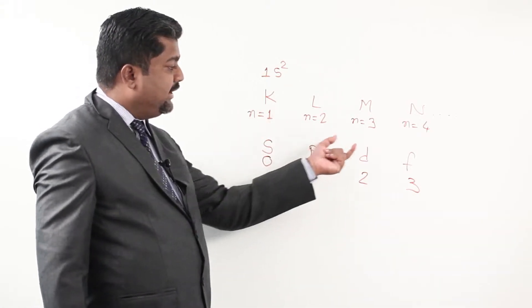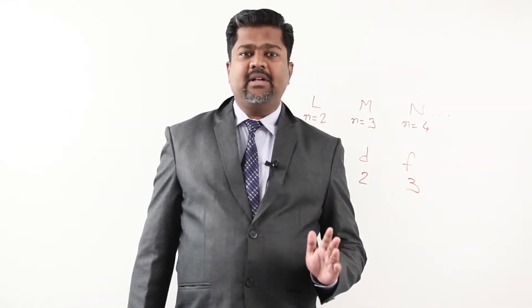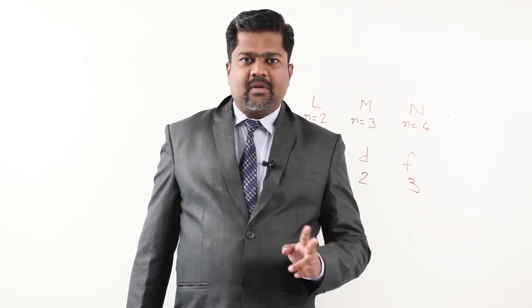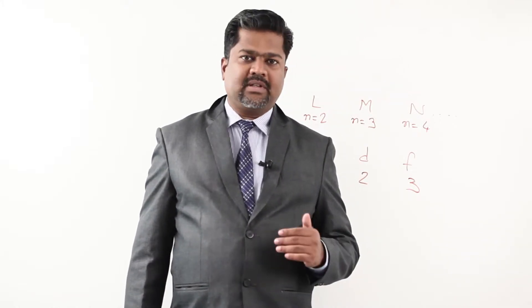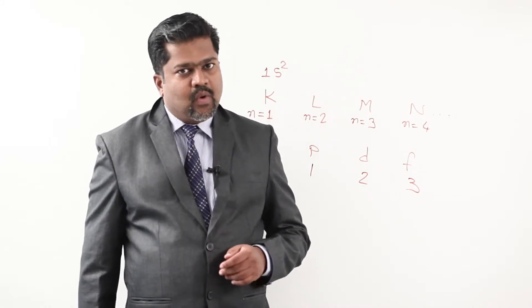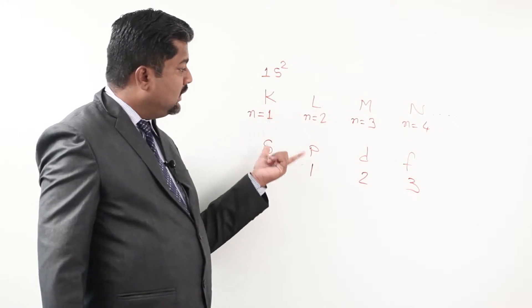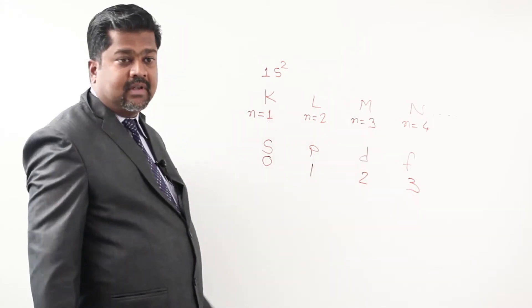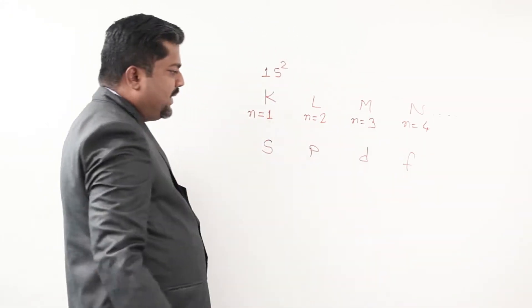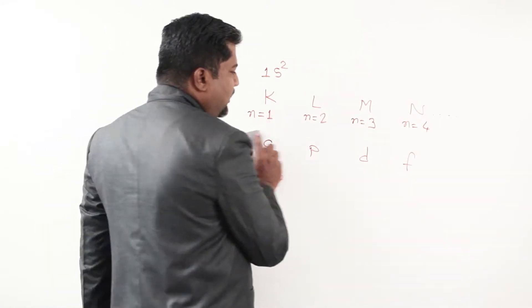The main shell is divided into 4 subshells. These subshells are also called by the azimuthal quantum number. But right now we are focusing on electronic configuration, not quantum number terminology. The 4 subshells are S, P, D, and F, and they are present in every shell — not necessarily all of them, but there are only these four subshell types.